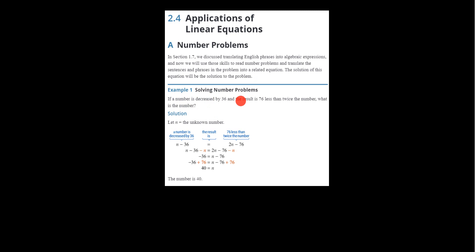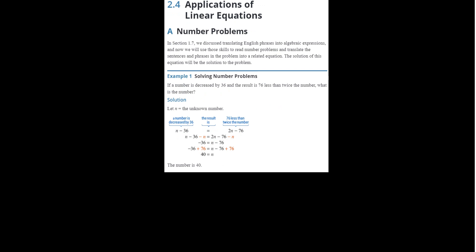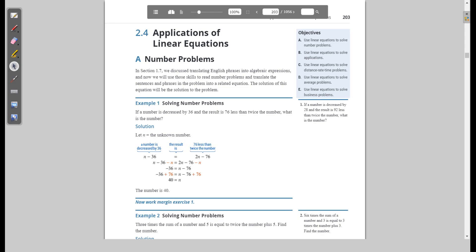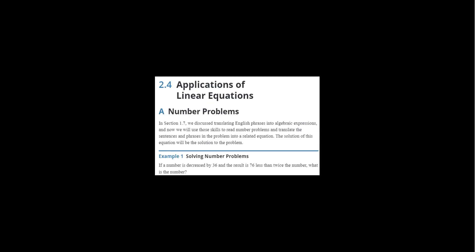An example of this is solving number problems. If a number is decreased by 36 and the result is 76 less than twice the number, what is that number? Let's go back and do this so I can really show the thought process of how I get to what I get to. So, what we need to do is figure out the variable.